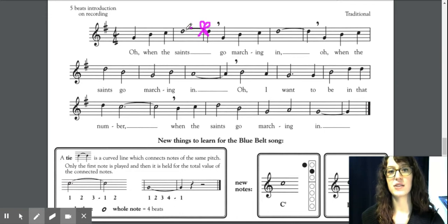So that we hold the note for the value of both notes. Normally this note would get four beats, then we'd play again for this quarter note and it would get one beat. However, because they're tied together, it's going to get five beats.